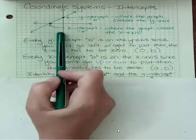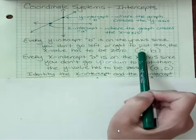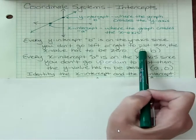So when I see a point with a zero in it, I know it's an intercept. If that x is zero, I know it's a y-intercept.